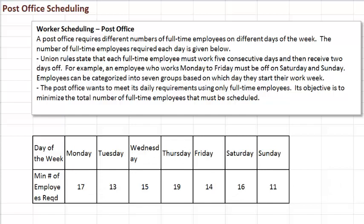If people were like robots, we would just match these numbers — tell 17 people to come on Monday, 13 on Tuesday, and so forth. But they are not robots, and you are required to give them a decent schedule: working 5 consecutive days and then 2 days off. For instance, an employee might work Monday through Friday and then take Saturday and Sunday off.